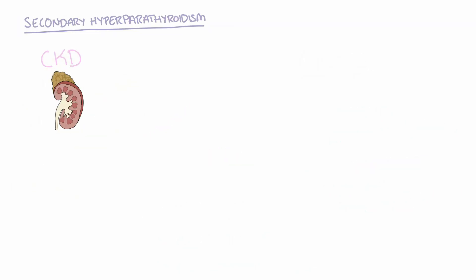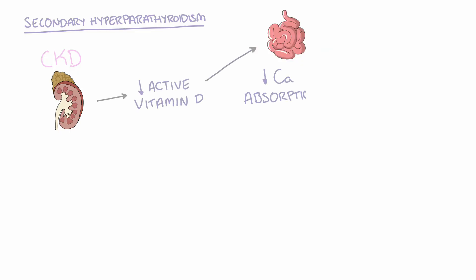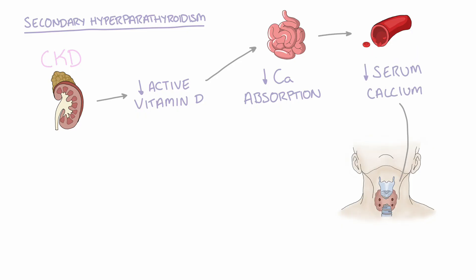Secondary hyperparathyroidism is caused by chronic kidney disease. In CKD, the kidneys produce less vitamin D. This consequently means less calcium is absorbed from the gut, which leads to hypocalcemia. As a result, the parathyroid tries to correct the low calcium levels by increasing parathyroid hormone release.